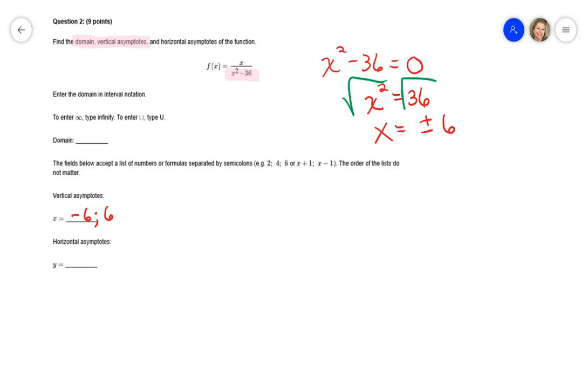And those are the two numbers that will be left out of the domain. Now, I'm a visual learner, and so when we're talking about the domain, we're talking about the entire x-axis going from negative infinity to positive infinity. However, we are not allowed to have a number at 6 or at negative 6. My domain can be from negative infinity up to the 6, but not including the 6. So I'd have an open circle here.